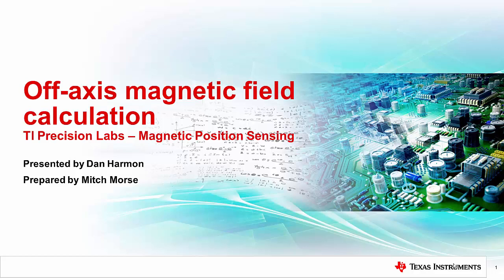In this video, I will discuss how a magnet rotating off-axis can affect the magnetic field measured by a nearby sensor.